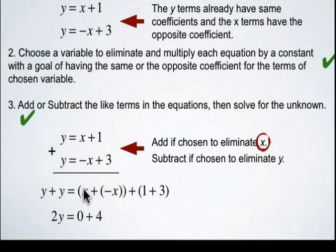And again, the reason it's called elimination is we're eliminating the x variable. So x plus negative x is 0.